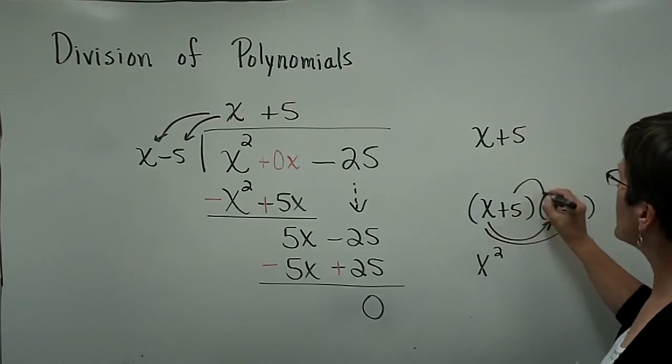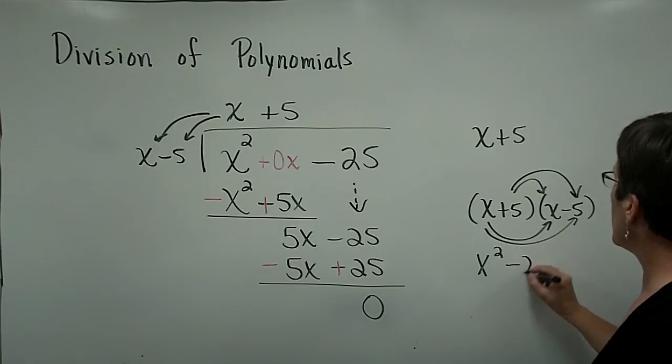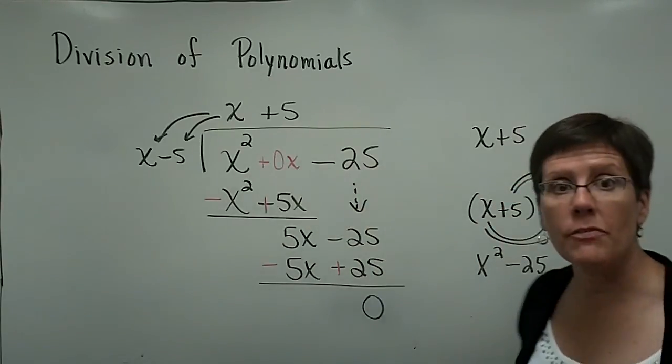Here's a minus 5x. Here's a plus 5x. That's gone. They had to be 0. And 5 times a minus 5 is a minus 25. That's the dividend, this x squared minus 25 that I started with.